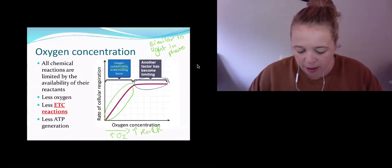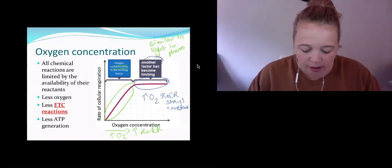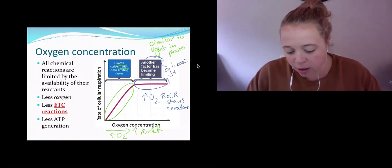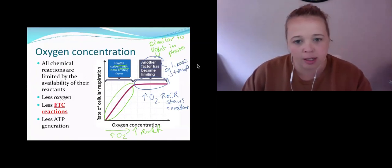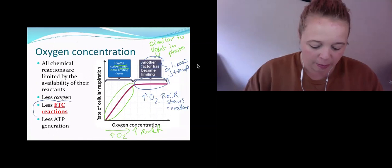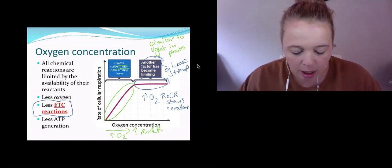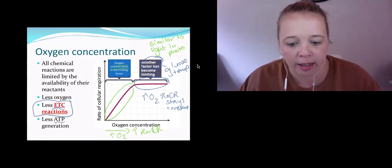We're still increasing the oxygen, but the rate of cellular respiration stays constant. Why is it doing that? Because there must be some other factor that's limiting it. What are the other factors? You could have glucose or temperature. The other thing that we need to link with this is if we're talking about oxygen, where does oxygen play a part in aerobic cellular respiration? It's this bit here. If you have less oxygen or whenever you increase the oxygen, we're going to be talking about the number of ETC reactions, and it's therefore going to result in a lot less ATP generation.